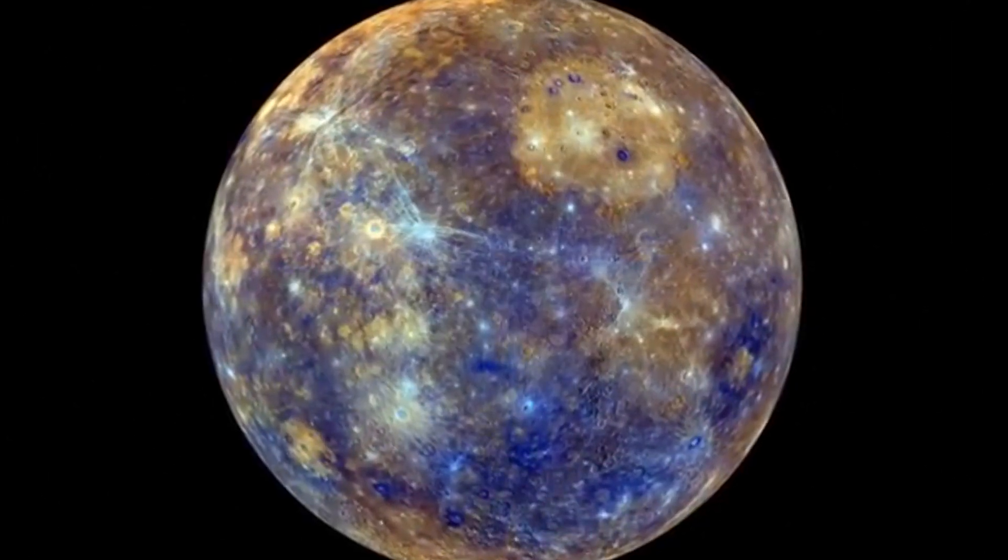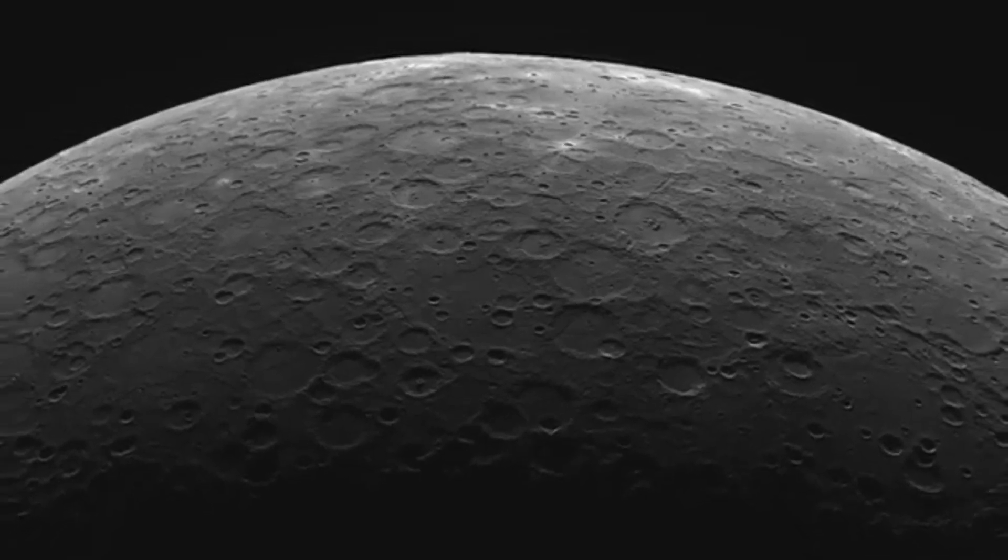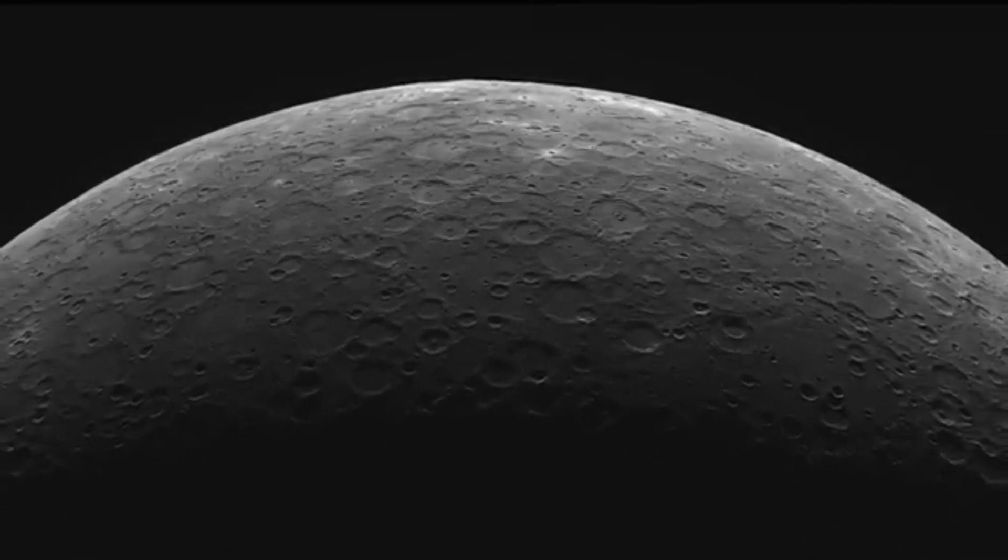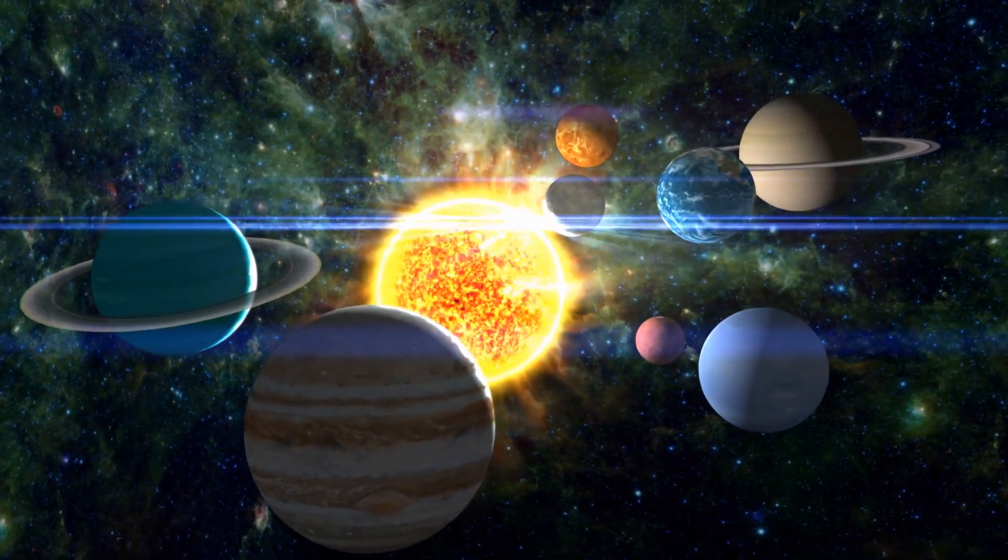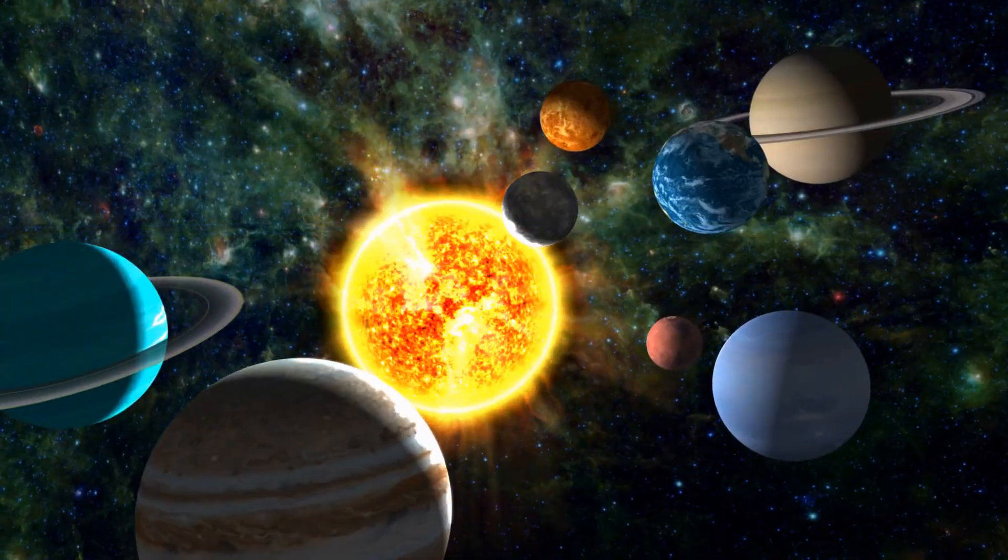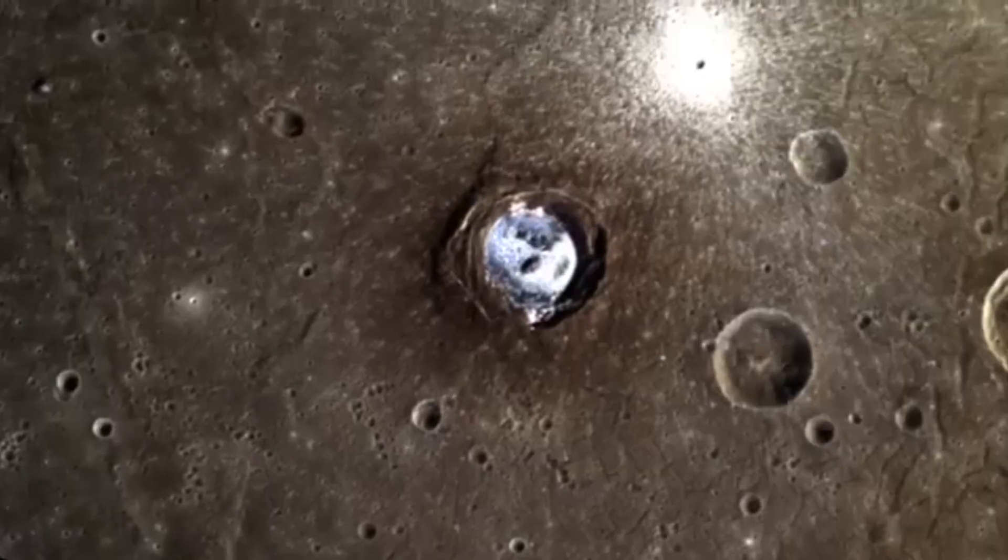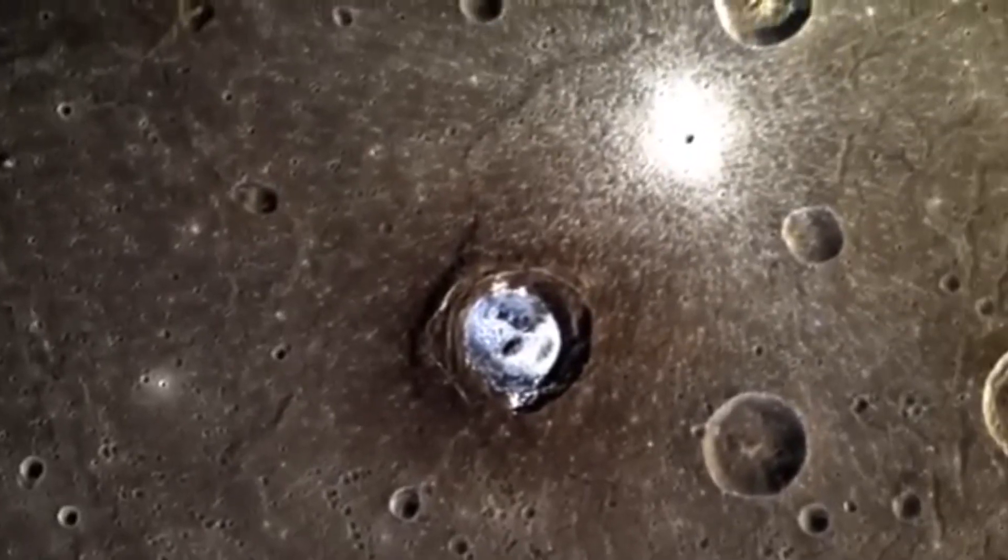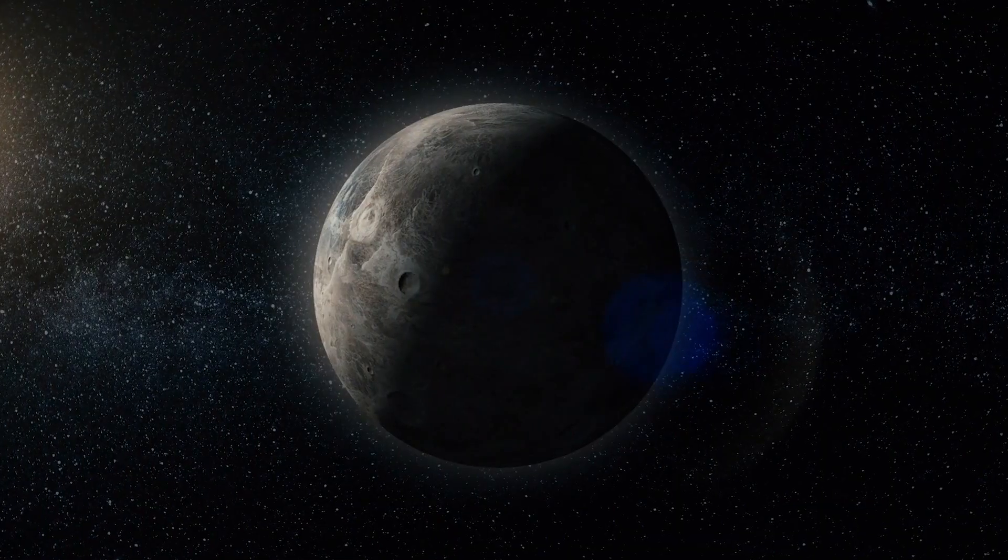But what's truly astonishing is the peculiar fact about Mercury's rotation and orbit. Although it's so close to the sun, Mercury's year is actually shorter than its day. When we think of planets, we usually imagine them orbiting the sun once a year and rotating on their axis once a day. Mercury, however, defies this pattern. Surprisingly, a year on Mercury is shorter than a day.